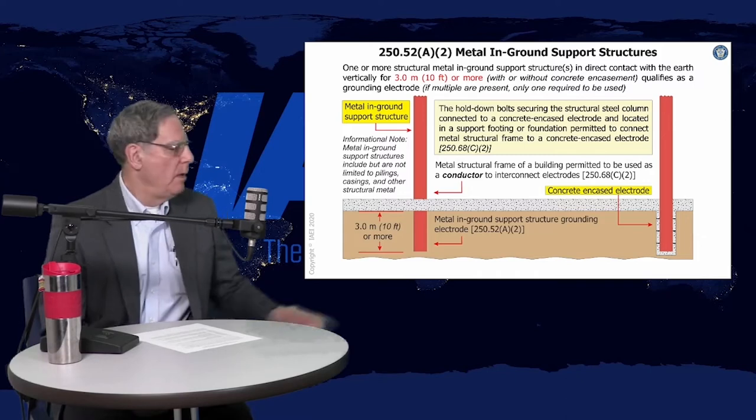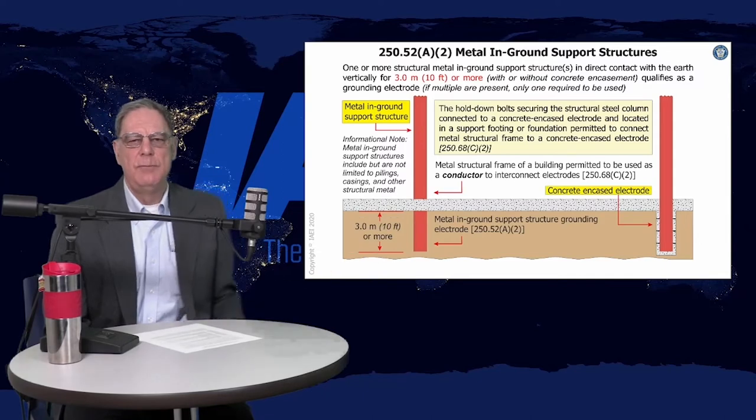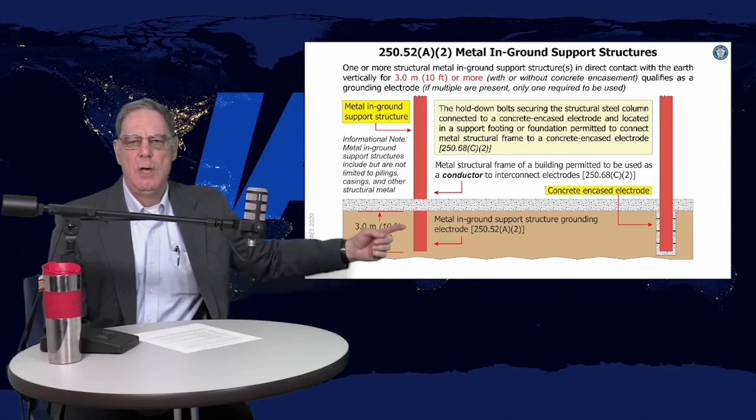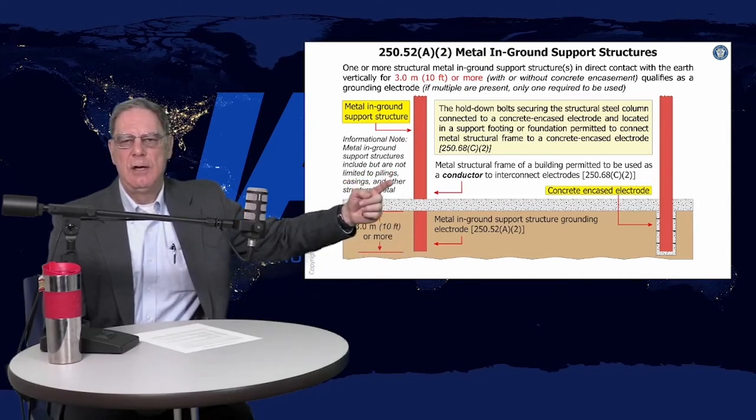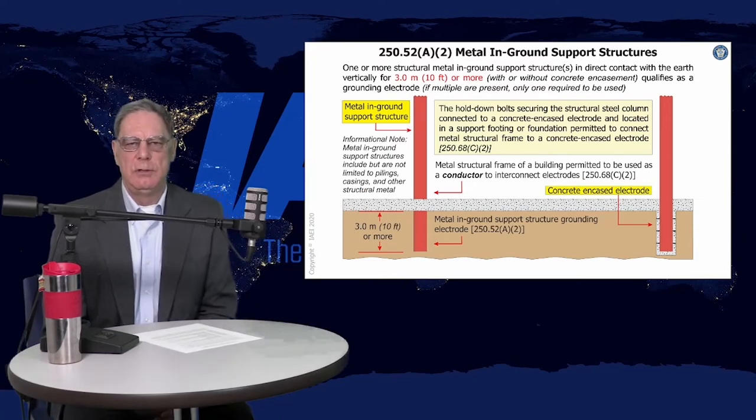What we're talking about is an I-beam or metal casing that might be driven in the ground. The part below the earth is the ground electrode. What is above the earth here is a conductor. That is not a grounding electrode, even though it's continuous. So below the earth it's an electrode, and once it changes above the grade it becomes a conductor.